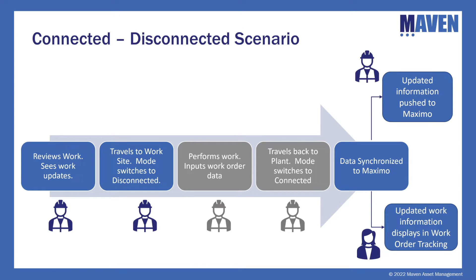Let's talk through a demo scenario. Starting at step one, we have a technician who begins his day by going into the My Schedule feature of Maximo Mobile and reviewing his assigned work. He travels to his work site, knowing he's in a very remote area, so he manually turns off his Wi-Fi and cell data, putting himself into disconnected mode. In disconnected mode, he views information from his local data store pulled in that morning and inputs work order information, which is stored locally.